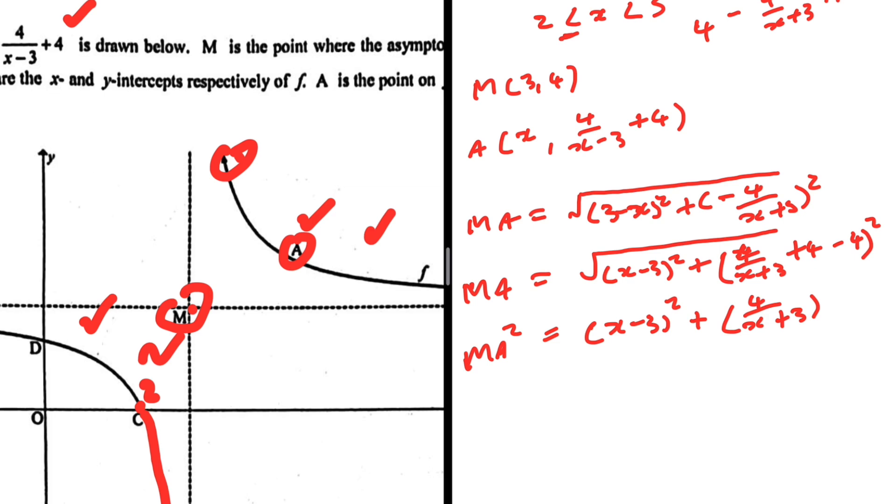MA squared equals (x minus 3) squared, and then plus 4 minus 4, that just falls apart, and then we have plus (4 over x minus 3) squared. So we have x minus 3, not x plus 3. Okay, I kind of like this. We're making progress now.